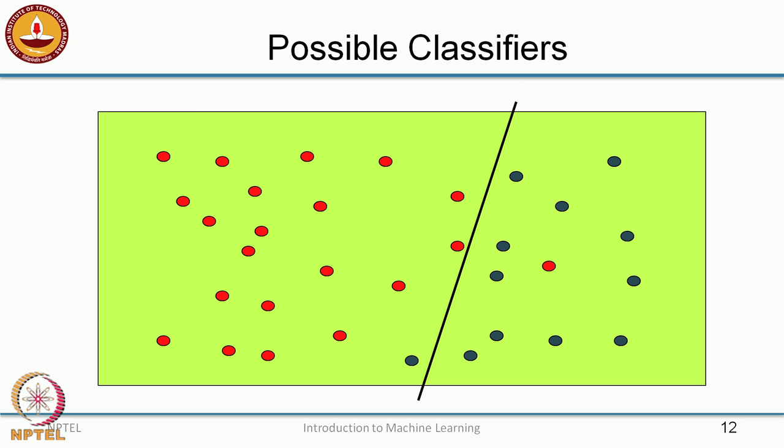Is this a good rule? More or less — we get most of the points correct except a few, so we can survive with this rule. This is not too bad, but then you can do slightly better. Now those pesky red points which were on the wrong side of the line earlier seem to be on the right side. Everything to the left of this line will not buy a computer; everything to the right will buy a computer.